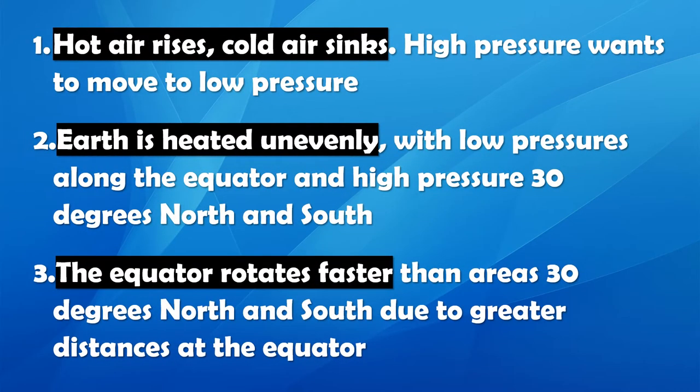We've learned that hot air rises, cold air sinks. High pressure wants to move to low pressure. Earth is heated unevenly with low pressure along the equator and high pressure 30 degrees north and south. The equator rotates faster than areas 30 degrees north and south due to a greater distance at the equator.